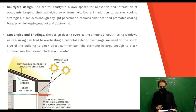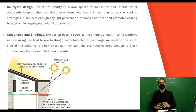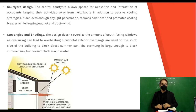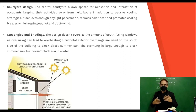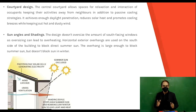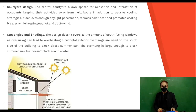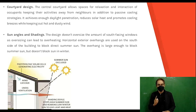The central courtyard allows spaces for relaxation and interaction of occupants, keeping their activities away from neighbors. In addition to passive cooling strategies, it achieves enough daylight penetration, reduces solar heat, and promotes cooling breezes while keeping out hot and dusty wind. The design avoids oversizing south-facing windows to prevent overheating, and horizontal exterior overhangs on the south side block direct summer sun while still allowing winter sun.